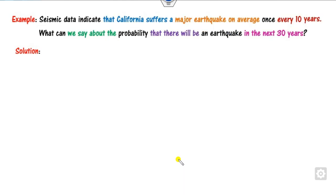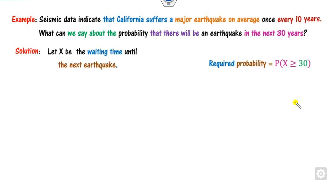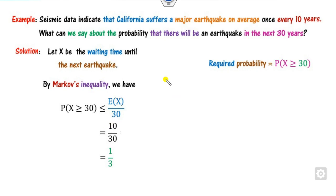California suffers from major earthquakes on average once every 10 years. Find the probability of an earthquake in the next 30 years. X = number of earthquakes; E[X] = 10 (average per 10 years). Applying Markov inequality: P(X ≥ 30) ≤ E[X]/30 = 10/30 = 1/3 as the required answer.